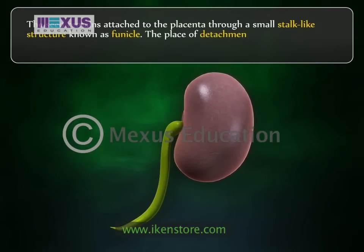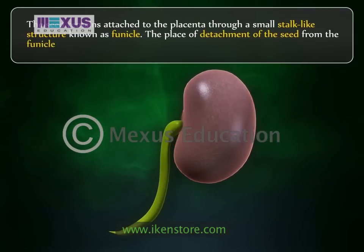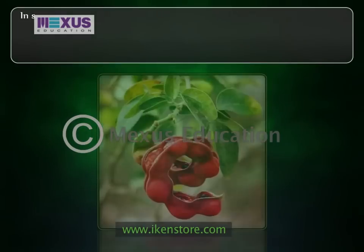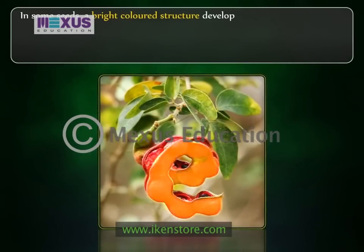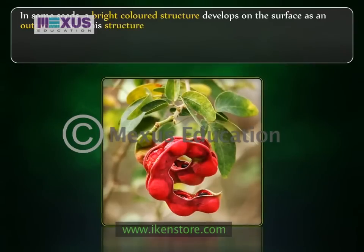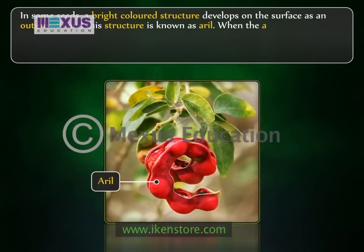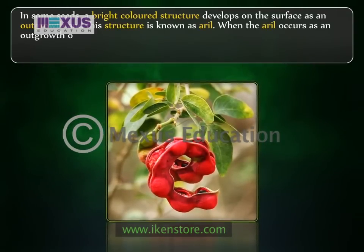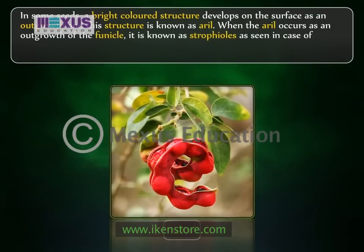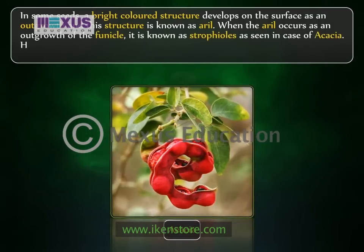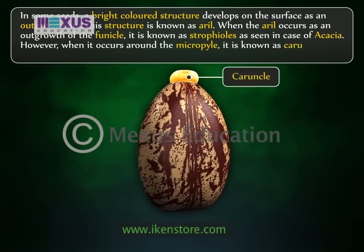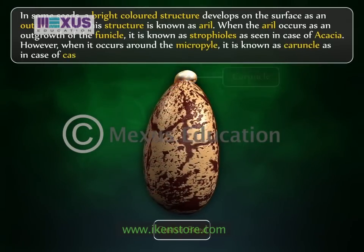The place of detachment of the seed from the funicle appears as a scar called the hilum. In some seeds, a bright colored structure develops on the surface as an outgrowth, known as the aryl. When the aryl occurs as an outgrowth of the funicle, it is known as trophioles, as seen in acacia. When it occurs around the micropyle, it is known as caruncle, as in castor seeds.